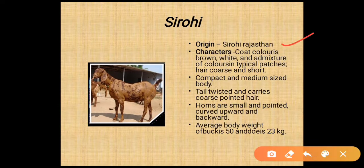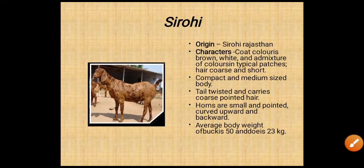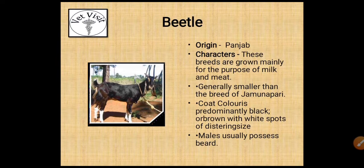The next breed is Sirohi. Its origin is Sirohi, Rajasthan. Characters: coat color is brown, white, and an admixture of colors with typical patches; hair coats are short; compact and medium sized body. Tail is twisted and carries coarse pointed hairs; horns are small and pointed, curved upward and backward. Average body weight: buck is 50 kg and doe is 23 kg.